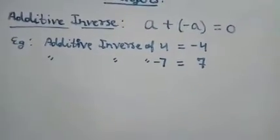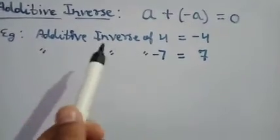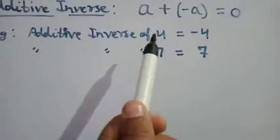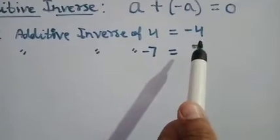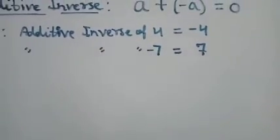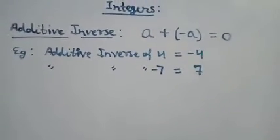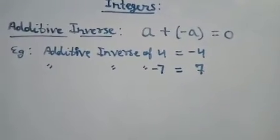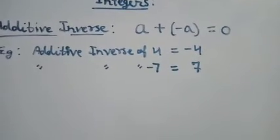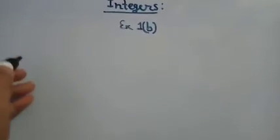So if you have to identify the additive inverse of any integer, you write the same integer but change the sign. I hope you understand the additive inverse — this is a property of integers. Now let's start exercise 1b, question number 2: Simplify.